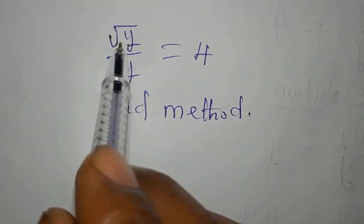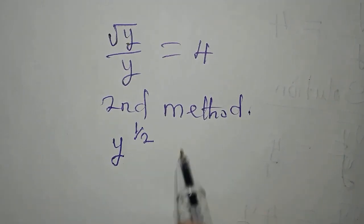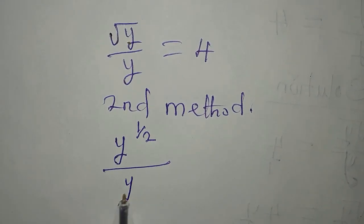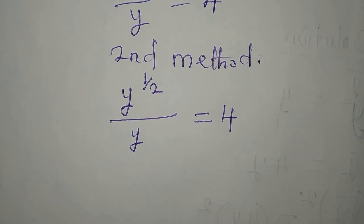Now in the first method we cross multiplied, but this time around let's work on this. Do you know that square root of y is the same as y to the power of half, 1 over 2, and we have over y equals 4. Now the next thing is...